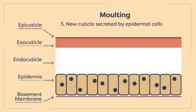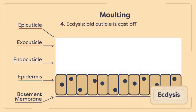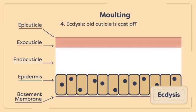Once the new cuticle is fully formed, the arthropod pushes against the old cuticle and casts it off in a process referred to as ecdysis.